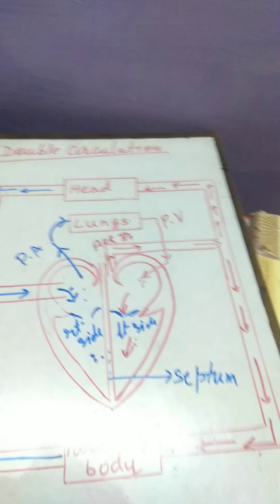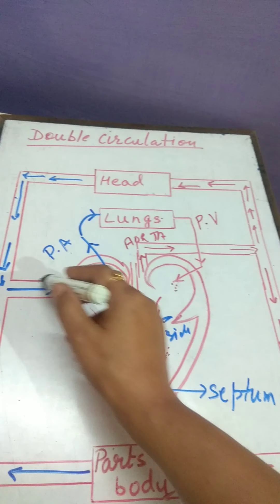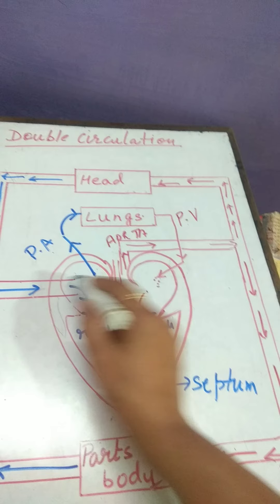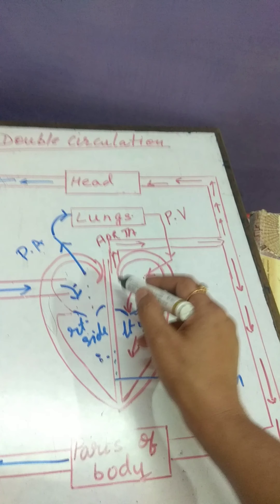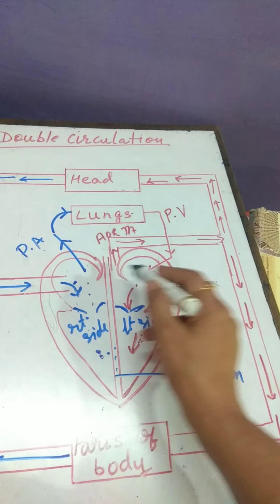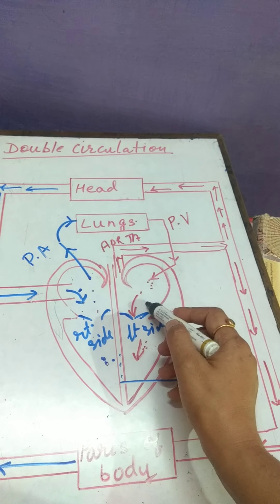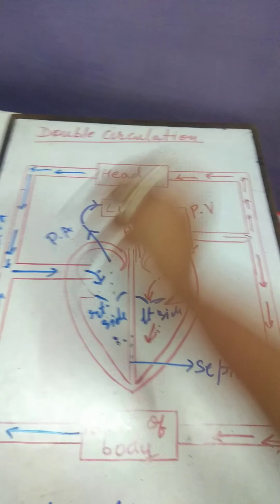Now, what is double circulation? Since, just see, blood is entering twice in the heart. One here, one here. So, since blood is entering twice in the heart, that's why it is known as double circulation.